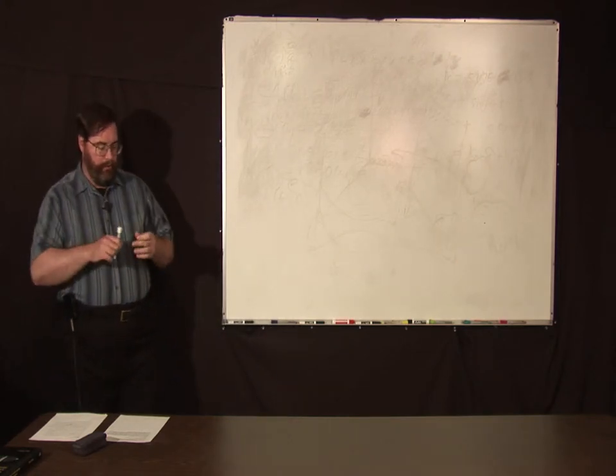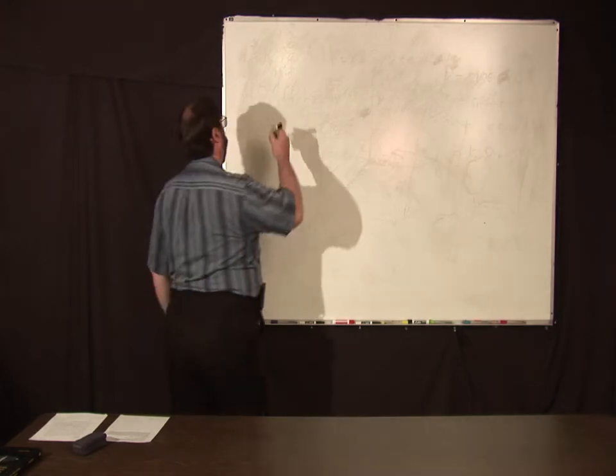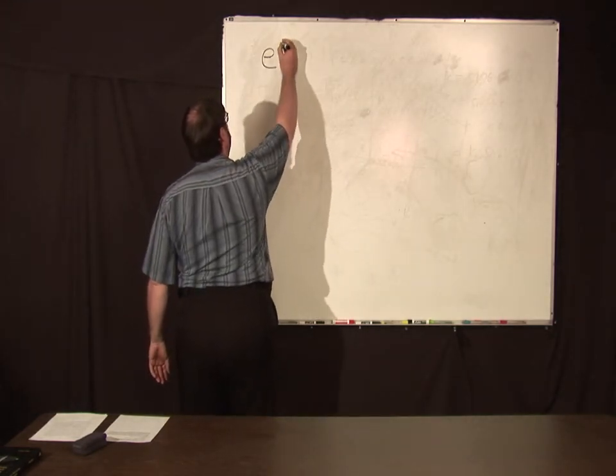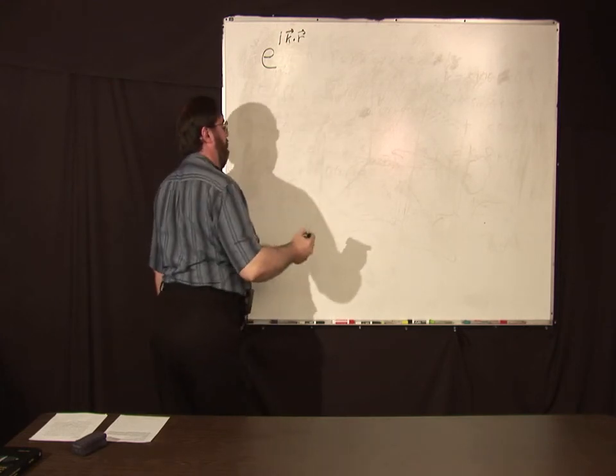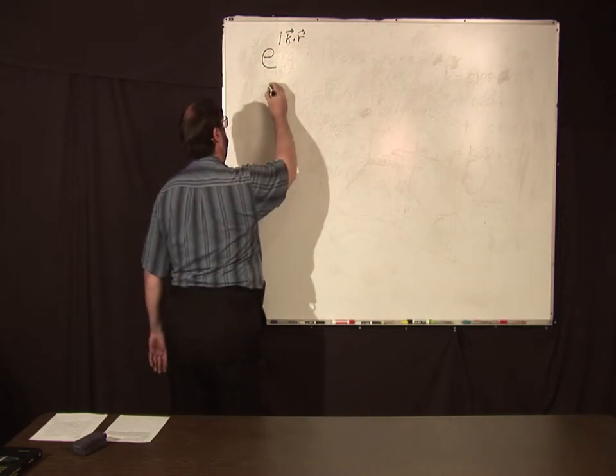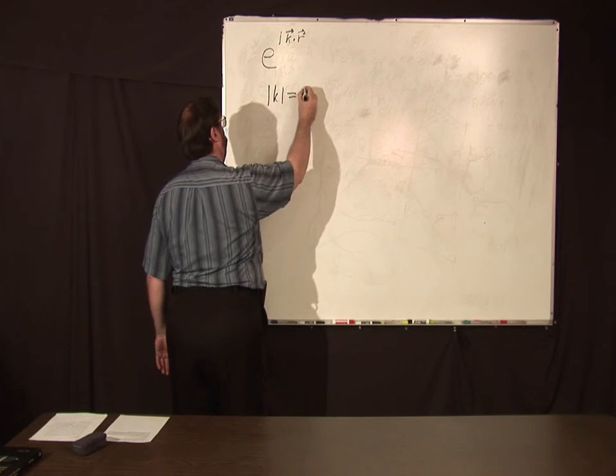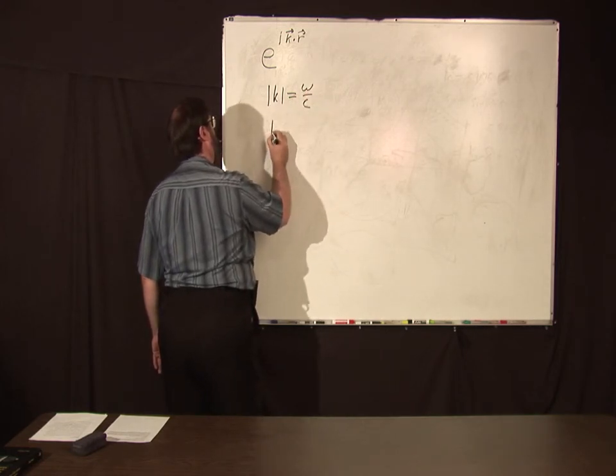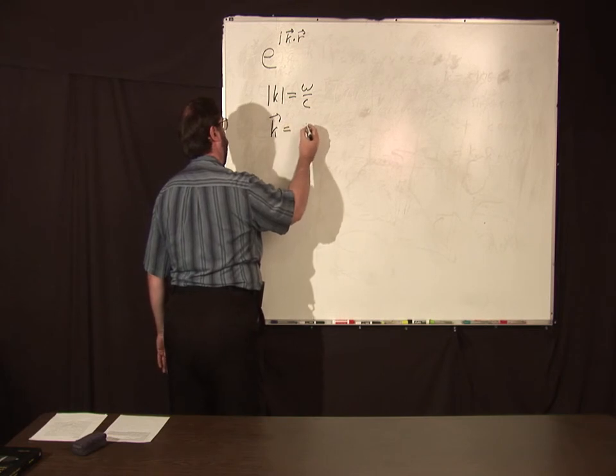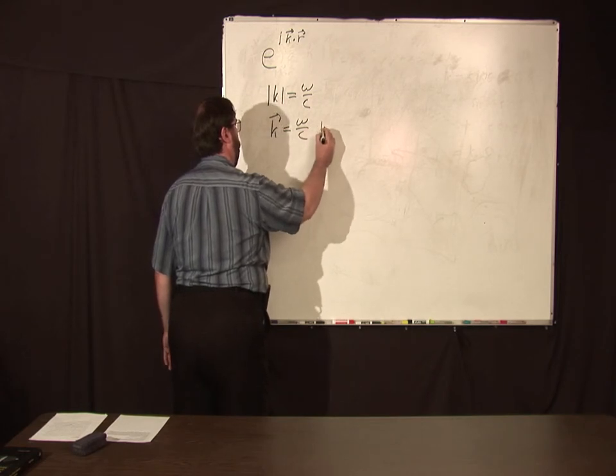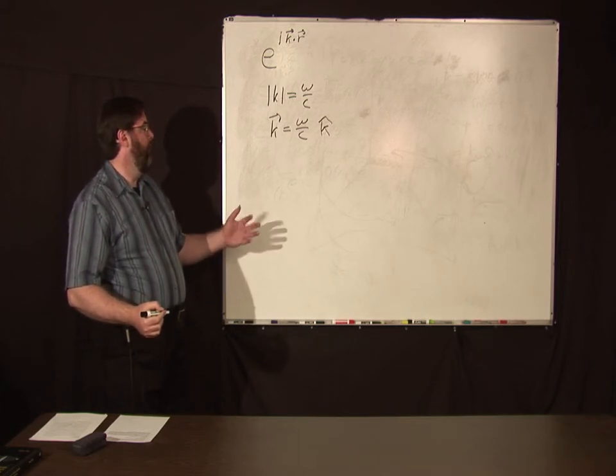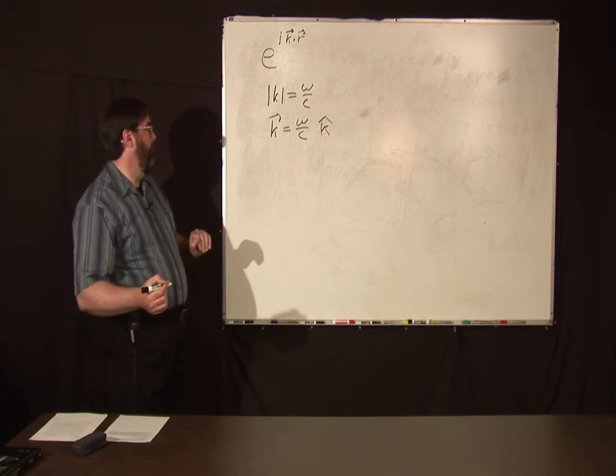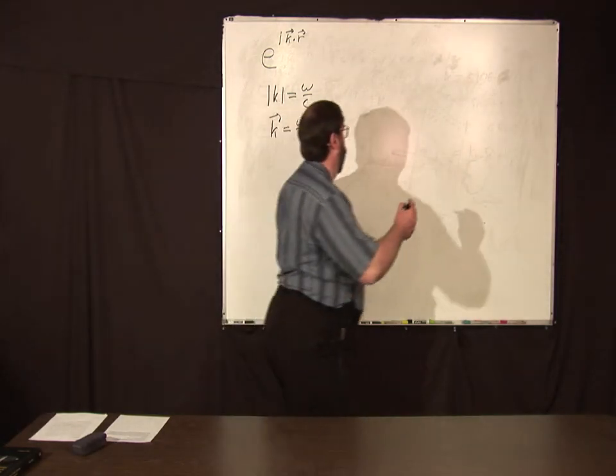We just went over in the past two weeks the general form of a plane wave is e to the i k dot r, where k, the magnitude of k equals omega over c, and k itself can be written as omega over c times a unit vector in the direction the wave is propagating.